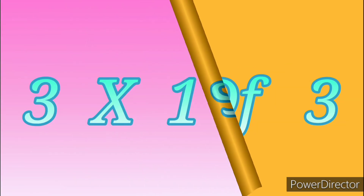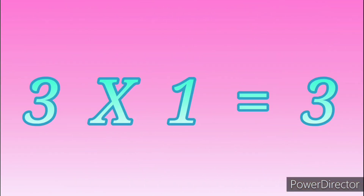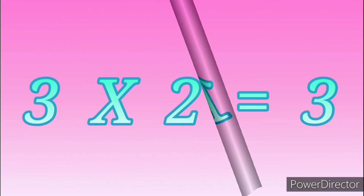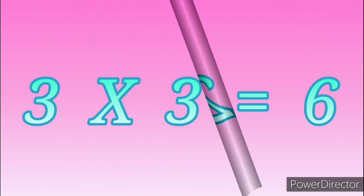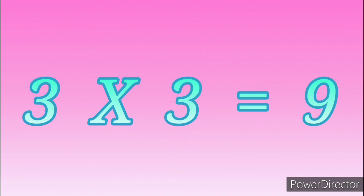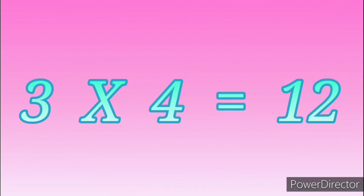Table of Three. 3 ones are 3. 3 twos are 6. 3 threes are 9.